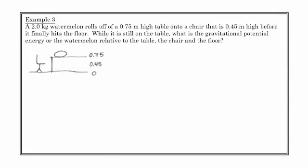So we want to talk about the gravitational potential energy of the watermelon relative to the table, while it's on the table. And so the way we do that is we'd say, okay, well, this is what we're given. The height of the table is 0.75. The height of the chair is 0.45. The height of the floor is 0. And we'd say, okay, well, let's talk about first with respect to the table.